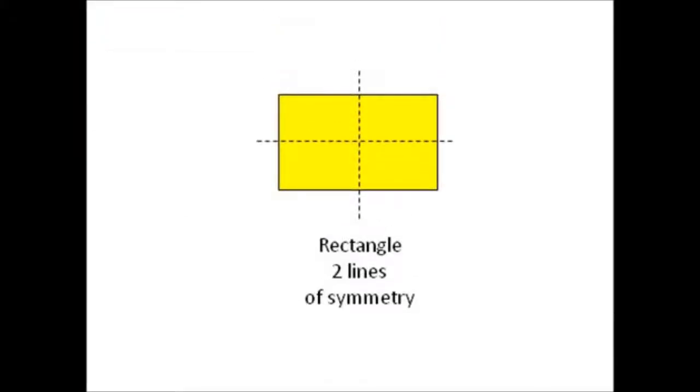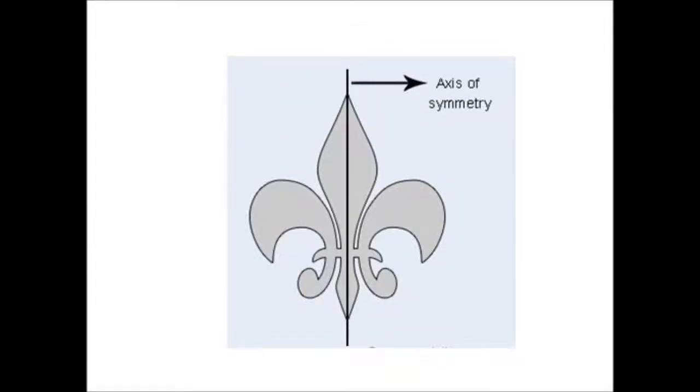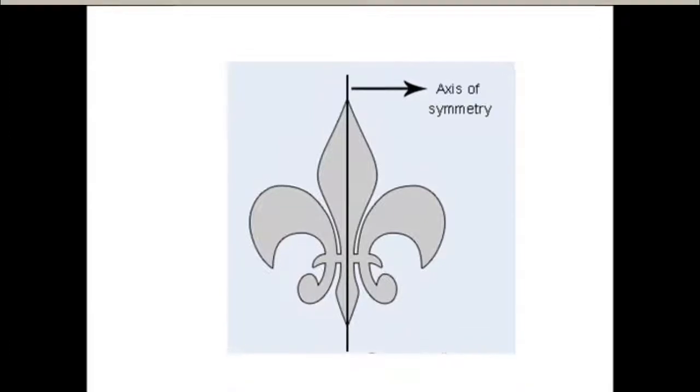Rectangle has two lines of symmetry. Parallelogram has two axes of symmetry. In this shape you can see there is a mirror image possible. So the line on which either side can form a mirror image is known as axis of symmetry for this image.